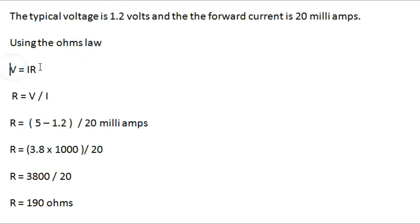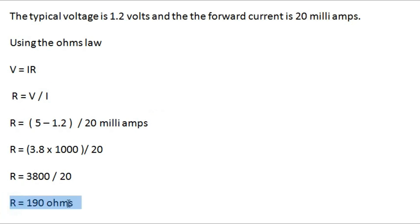Using Ohm's Law: V = IR, so R = V / I. R = (5 - 1.2) / 20 milliamps, which gives R = 190 ohms. The nearest standard value is 220 ohms, but since I have a 330 ohm resistor available I'm going to use that.